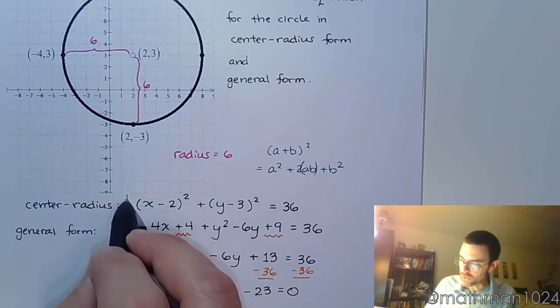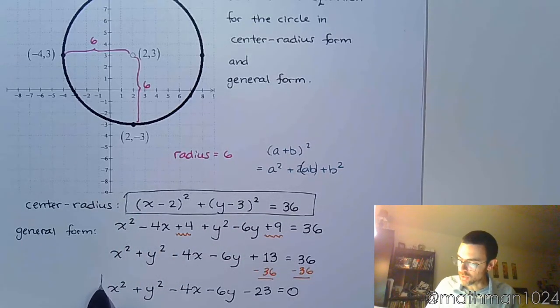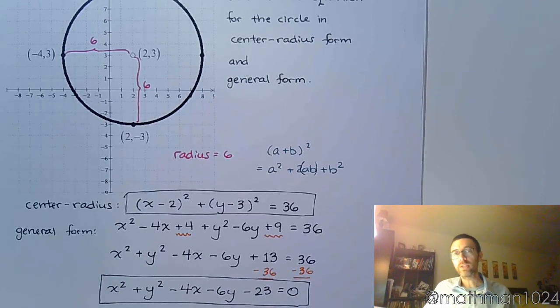So here is your center-radius form, it's an easy guy to pick off. And then we had to expand that to put this into the general form. Make sure that you square correctly, make sure that you watch your signs, and you're going to be all right.